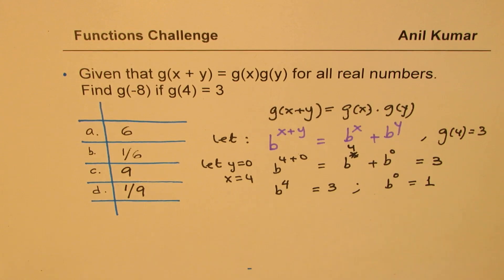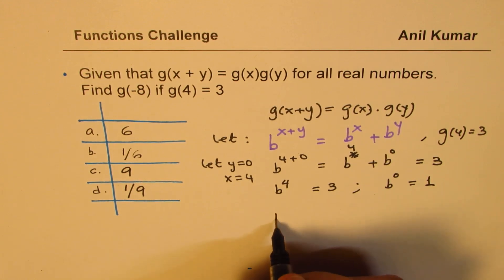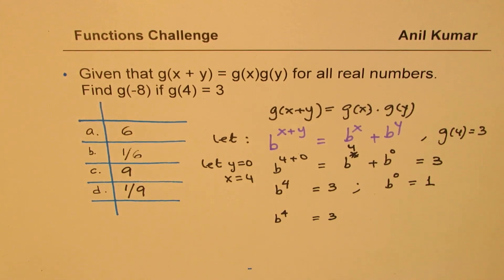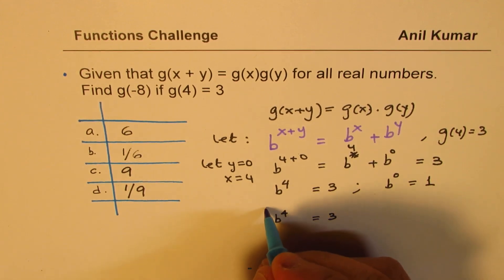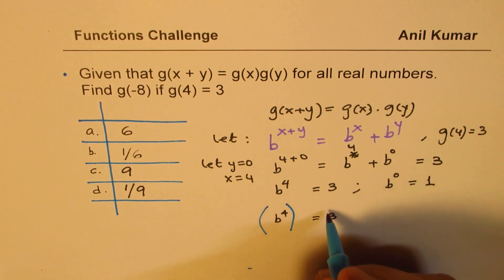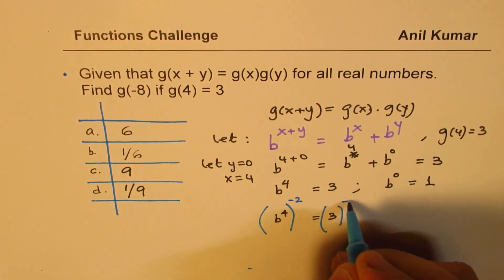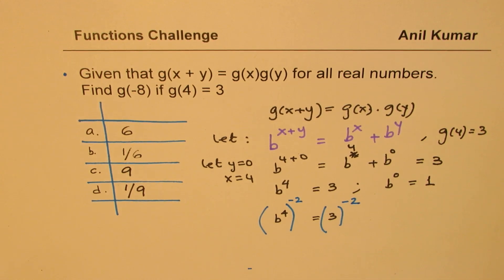Well, what I could do here is, to the equation b to the power of 4 equals to 3, if I take the exponent, both sides, as minus 2, I get minus 8 here, right? As minus 2. In that case, I get b to the power of minus 8 equals to 1 over 3 squared, which is 9, right?